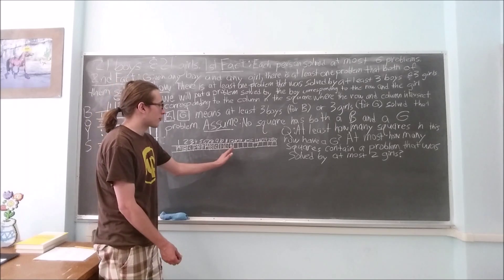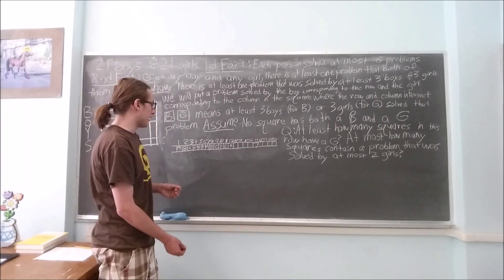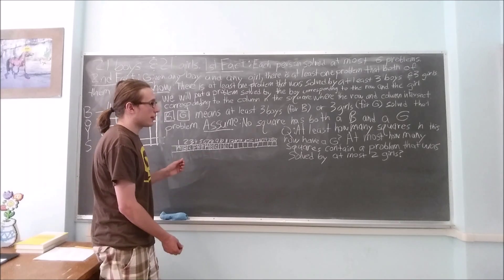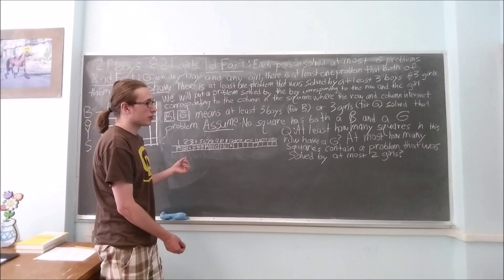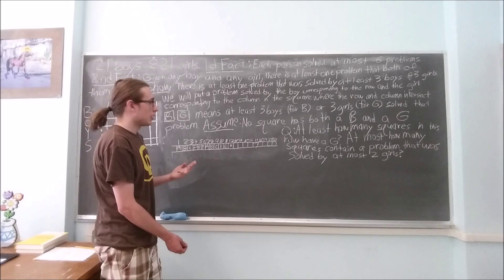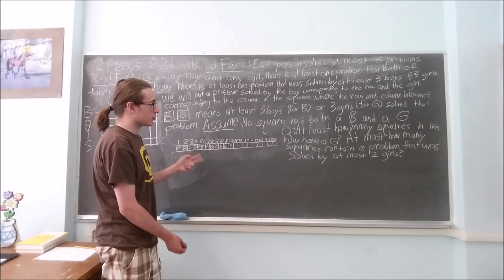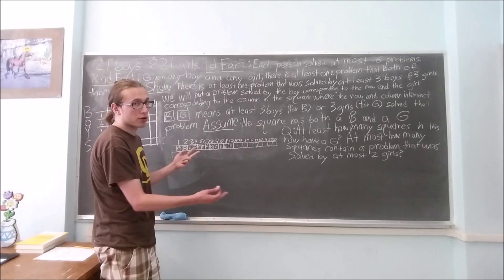But now, I have to get from thirteen to twenty-one, and so I'm going to have to use one of these letters another time. And then, that letter will become a letter that was solved by three girls. And if I use two more letters, then there will be two problems that were solved by three or more girls.